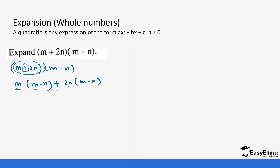So let's open. m times m is going to give us m squared, and then m times minus n — the minus is going to remain, forming minus mn. The second part we have a positive. So 2n times m is going to be 2mn. And then 2n times negative n: plus times minus is minus, so it becomes minus 2n squared, because with two n's it becomes n squared.